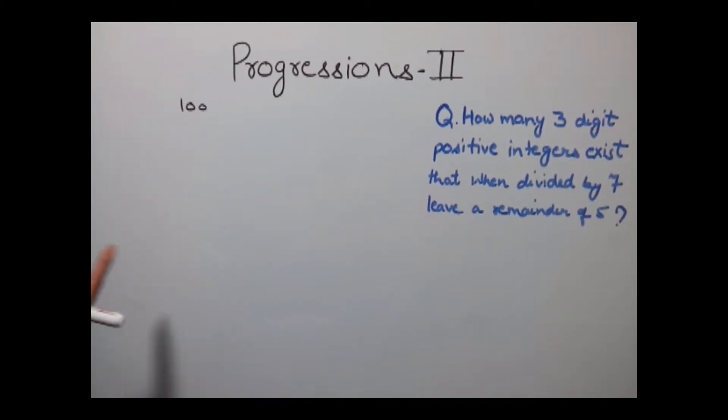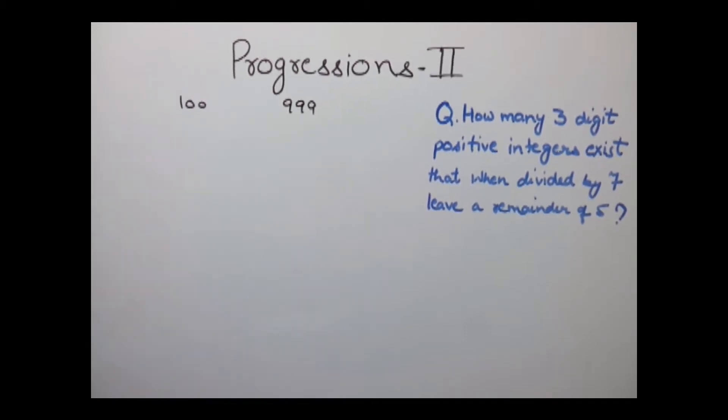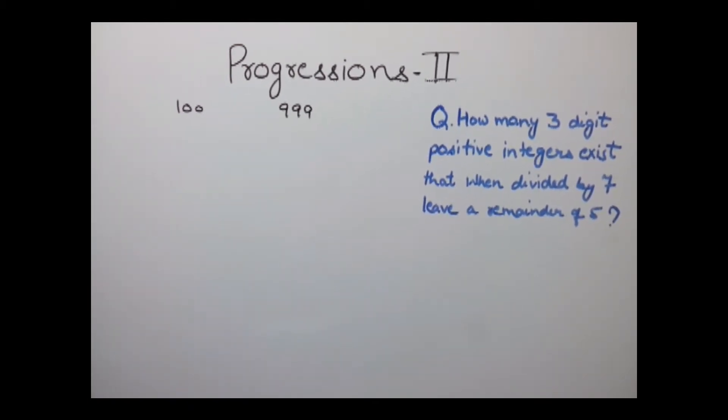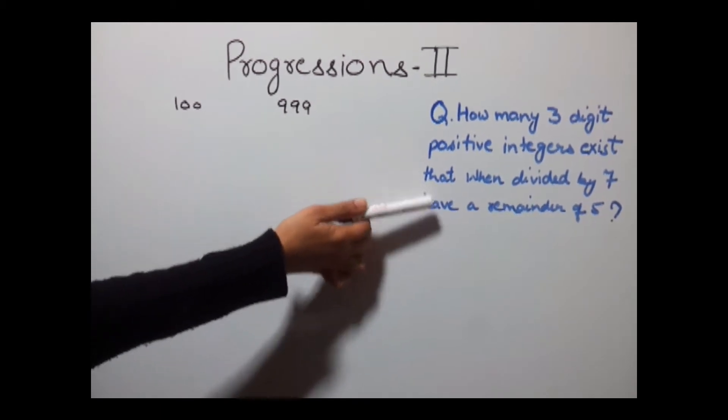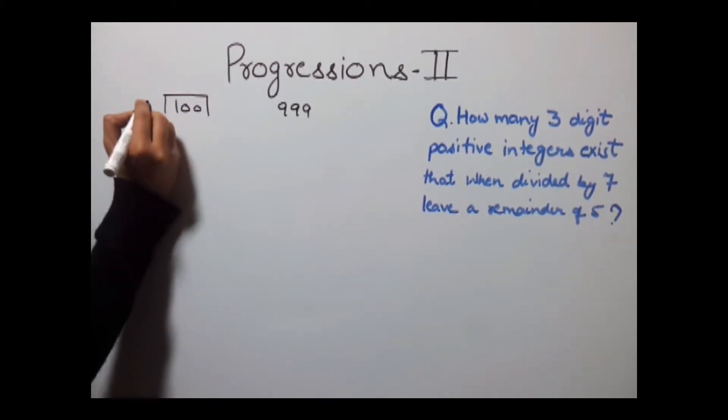For this type of question, what we do is first write the lowest 3-digit number, which is 100, and maximum 3-digit number, which is 999. Now we need to find the first number which if we divide by 7 gives a remainder of 5. So we'll divide both numbers by 7.